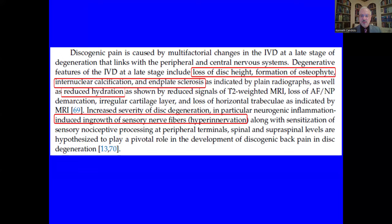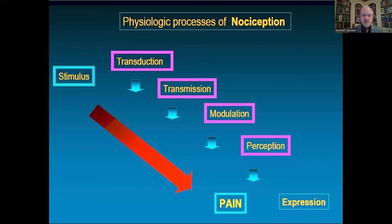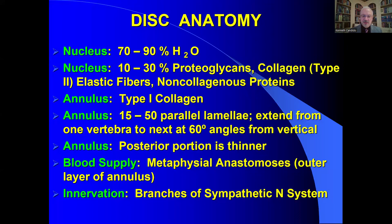Recall that the intervertebral disc is 70% to 90% aqueous, and the nucleus is characterized by type 2 collagen, which changes to type 1 collagen — characteristic of the annulus — over time as the disease advances. There is also an ingrowth of sensory nerve fibers, which we call hyperinnervation. Discogenic pain is a classic nociceptive-type pain in most cases, meaning there is a stimulus — the degeneration of the disc nucleus — which leads to transduction, transmission, modulation, and perception, ultimately with pain expression in the central nervous system.